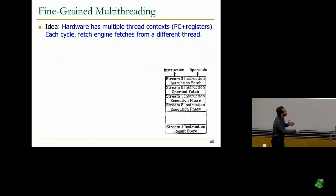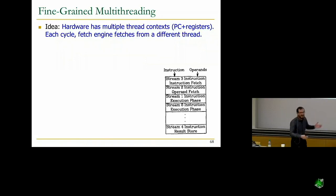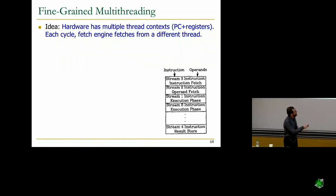You can see this in the diagram. For example, this is the fetch stage. When one instruction is being fetched from thread 3, another instruction is fetching its operands in thread 2, another instruction from thread 1 is executing, another from thread 8 is executing, and another from thread 4 is storing its result. There is no single thread that has two instructions at the same time in the pipeline.